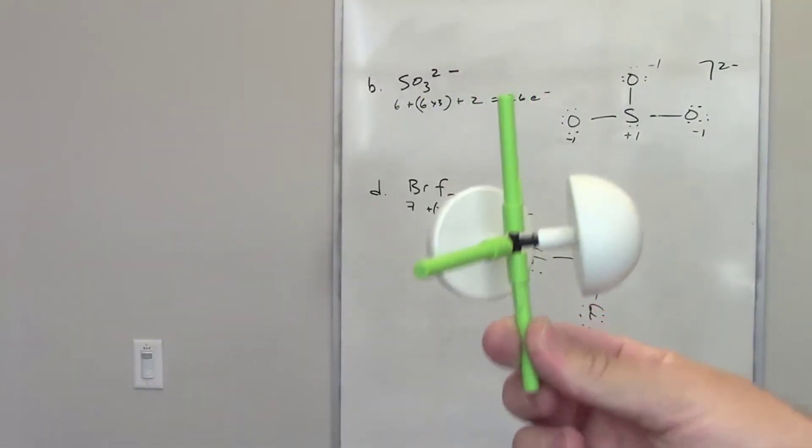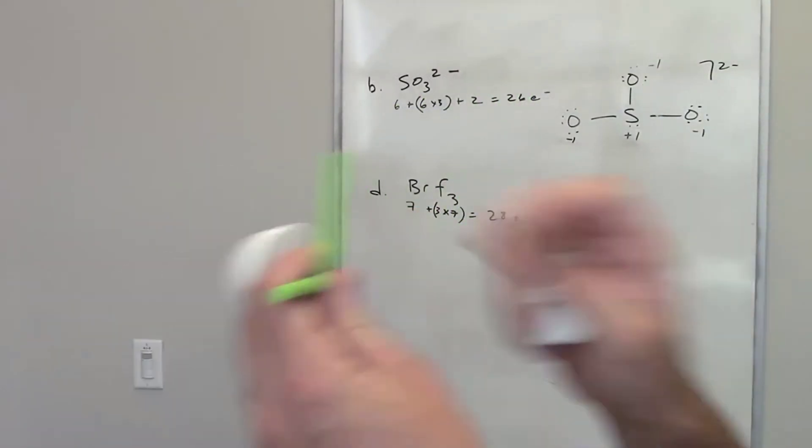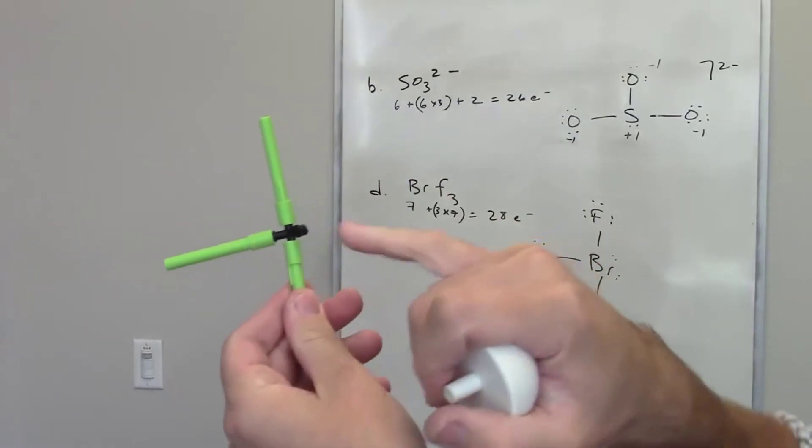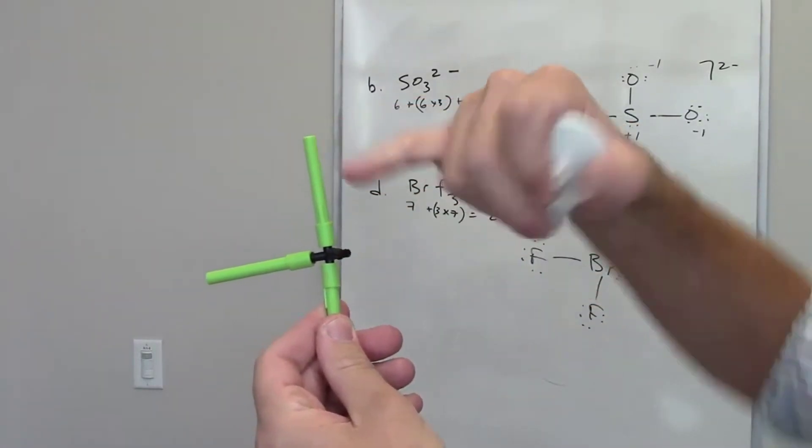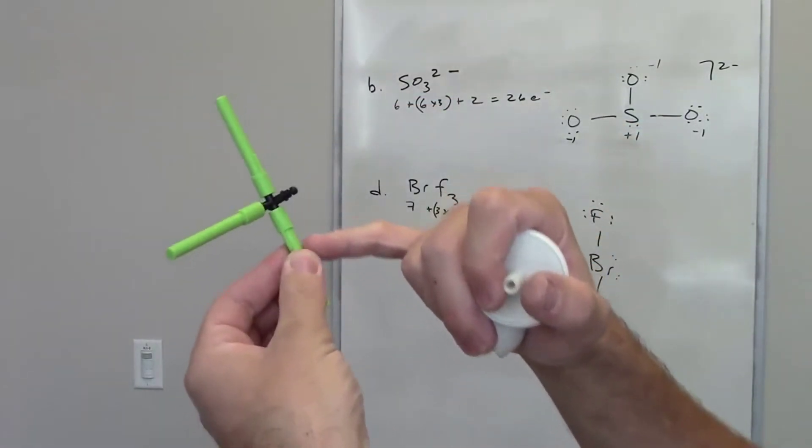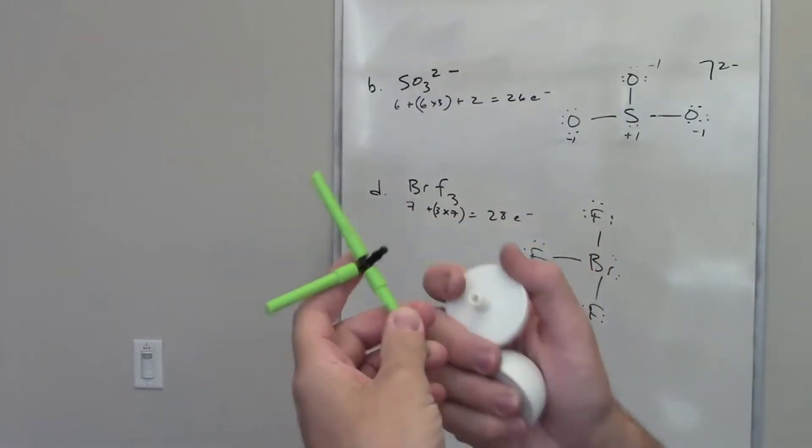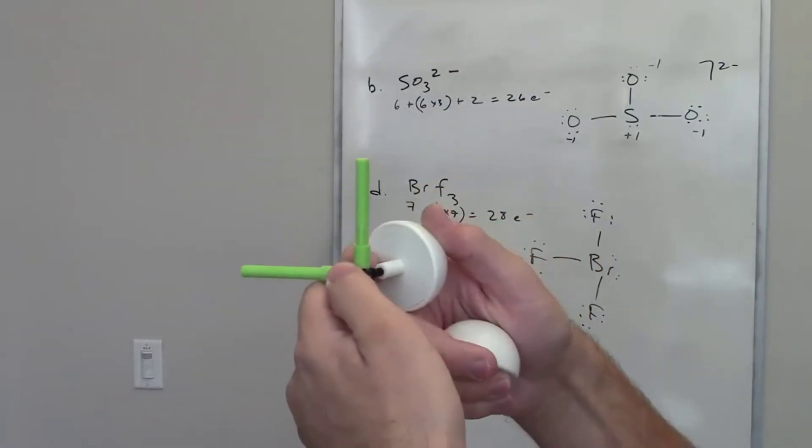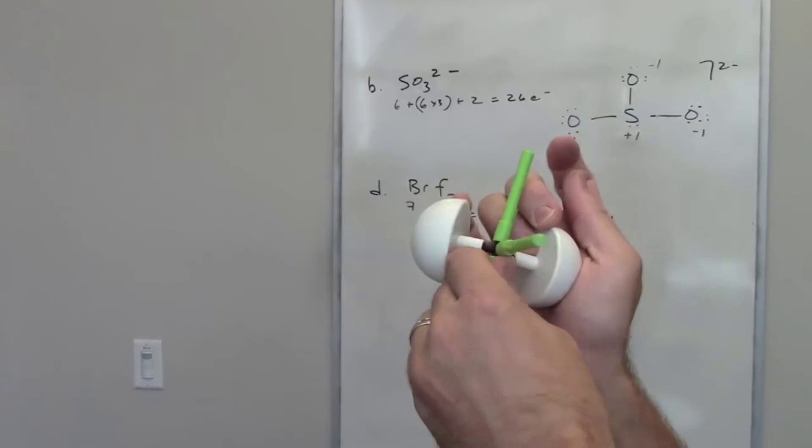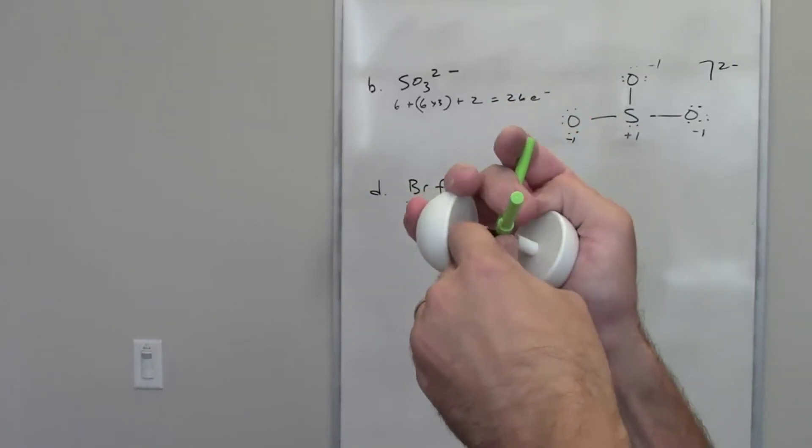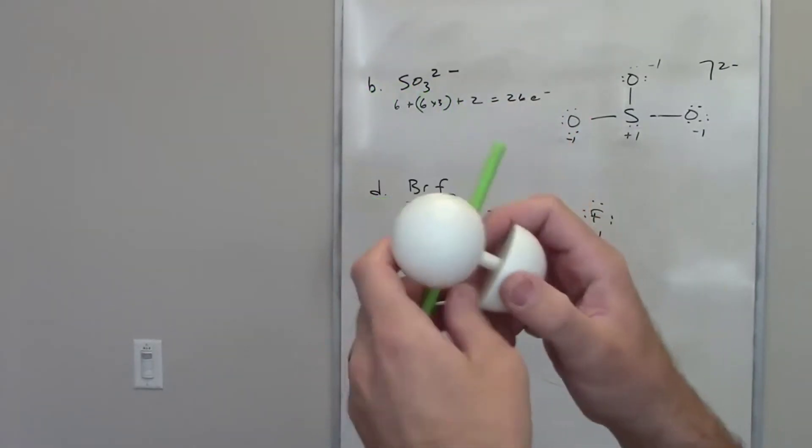So looking at this closely, I'll remove these lone pairs so that we can see them here. This is supposed to represent a bromine, and this is supposed to be a bond to a fluorine, a bond to a fluorine, and a bond to a fluorine. And then these little bulbous things are supposed to be electron pairs or lone pairs. I've got lone pairs.